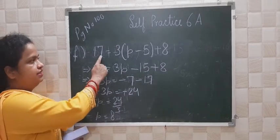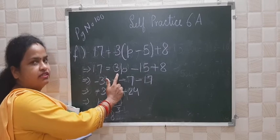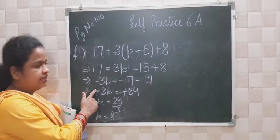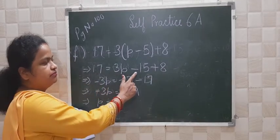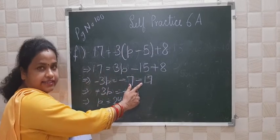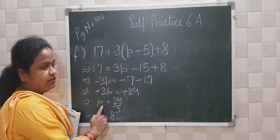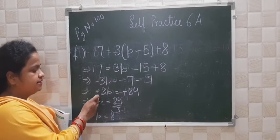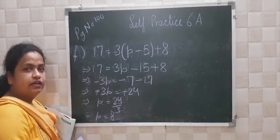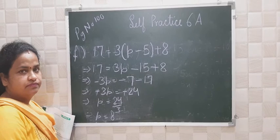So how you go: 17 equals 3(p minus 5) plus 8. First we solve the bracket: 3p minus 15 plus 8. Now 3p runs towards the left hand side. Minus 15 plus 8 gives minus 7, and this minus 17 goes to the right hand side — minus 7 minus 17 gives minus 24. The p will be 24 by 3 because the minuses on both sides cancel. So p equals 8. Clear?